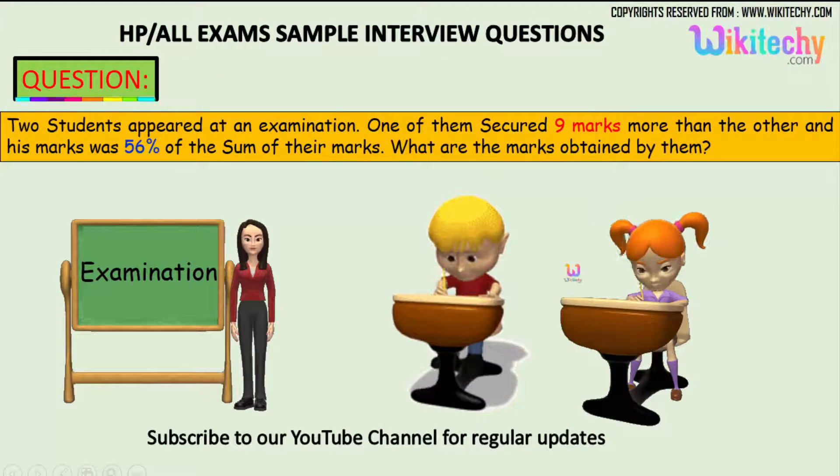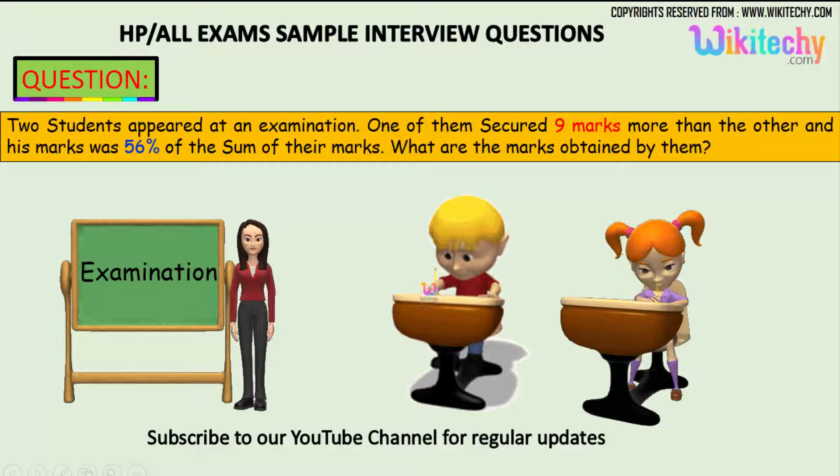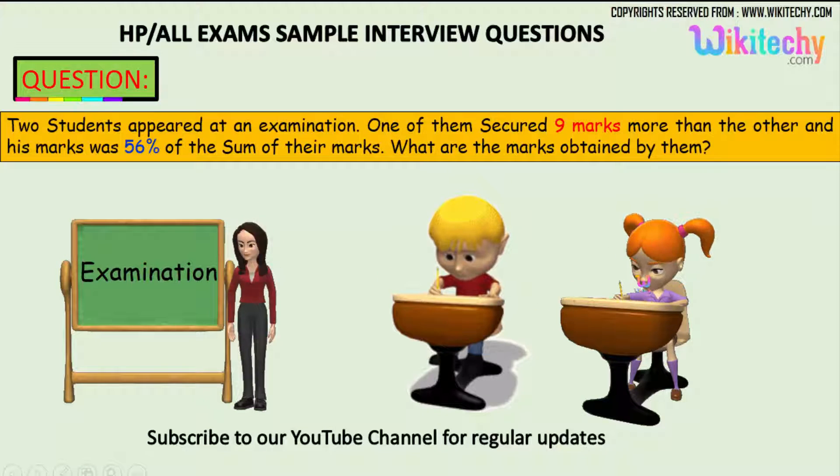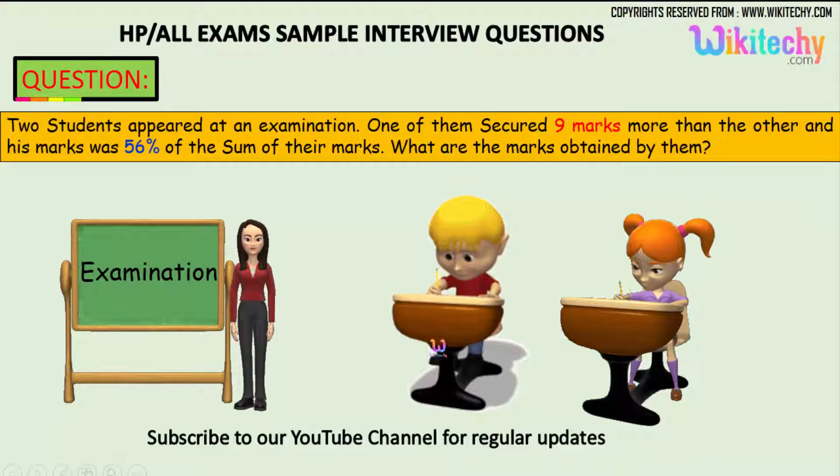Two students appeared at an examination. One of them secured nine marks more than the other, and his marks was 56 percentage of the sum of their marks. What are the marks obtained by them?